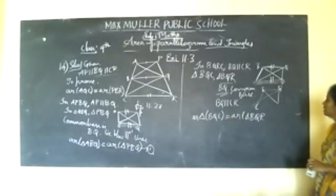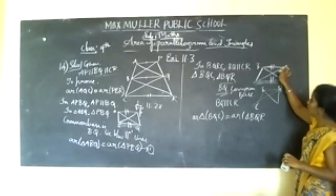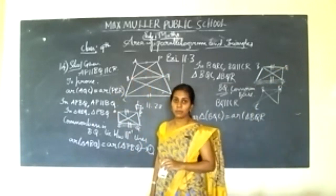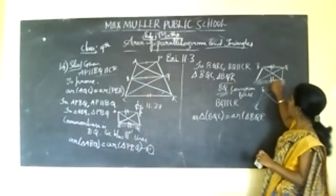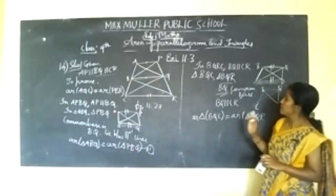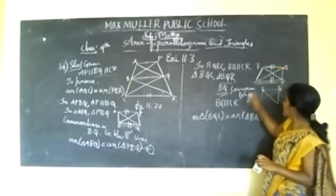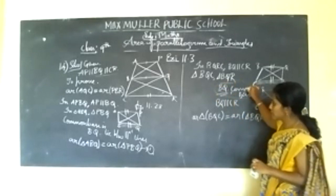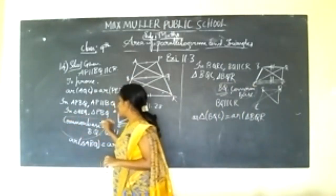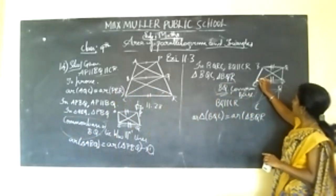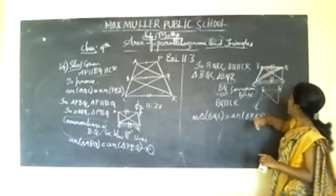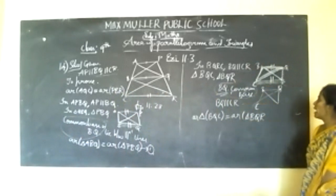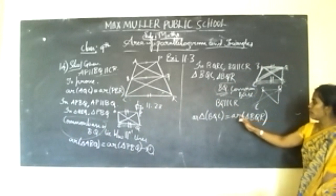You have to take BQC because you need BQR as a common base for both upper and lower parts. That's why you take triangle BQC and BQR. BQ becomes the common base and BQ is parallel to CR, so you can conclude the areas of these triangles are equal.